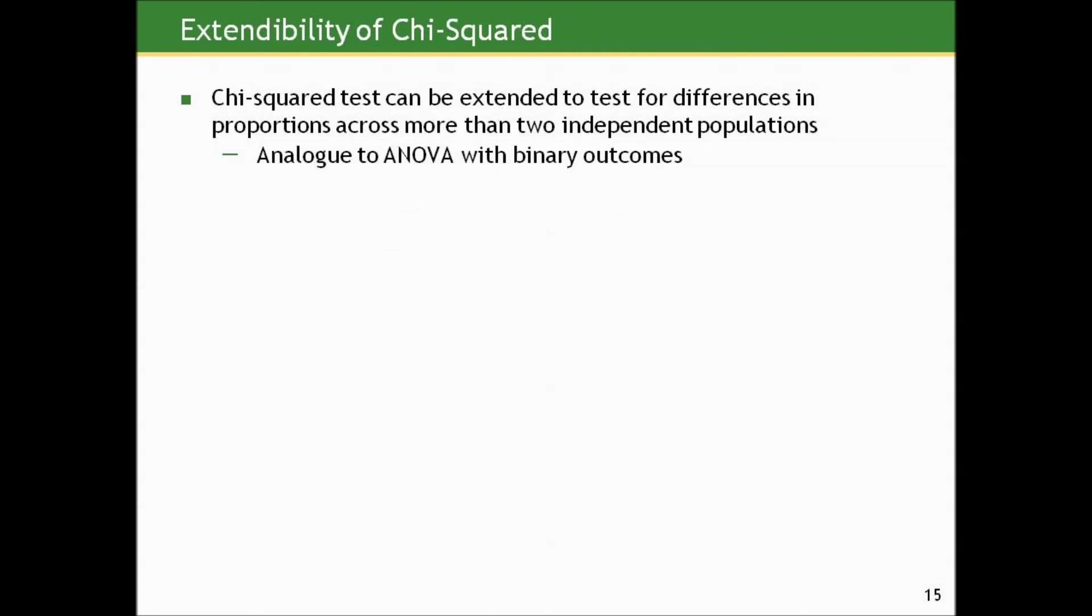One nicety of the chi-squared that the two-sample z doesn't have property-wise is the chi-squared test can be extended to test for differences in proportions across more than two independent populations in one test. As I said in the beginning, it's the analogous to ANOVA with binary outcomes instead of continuous.